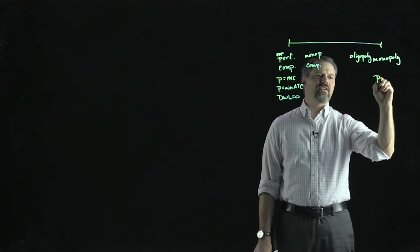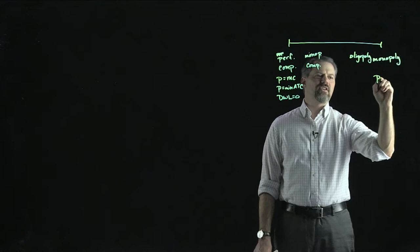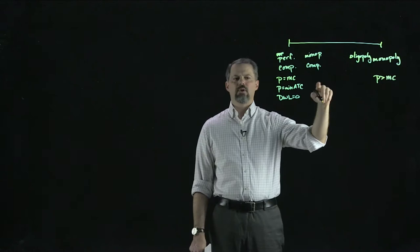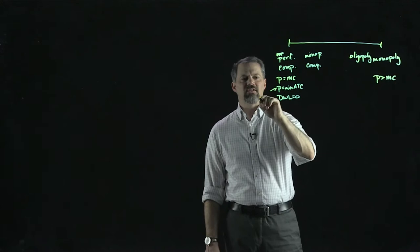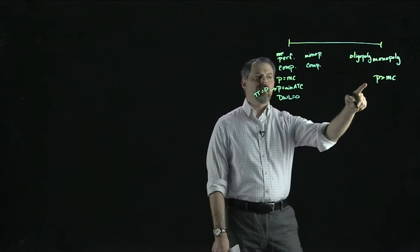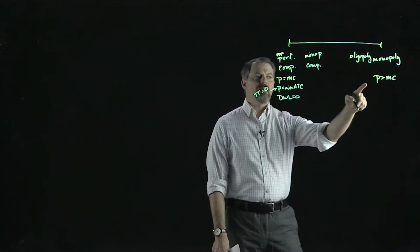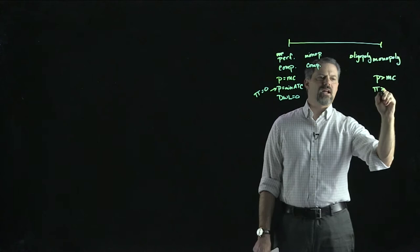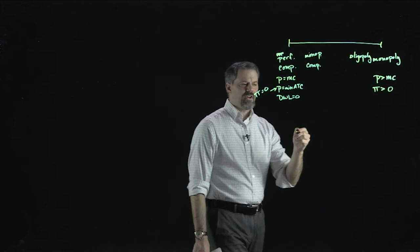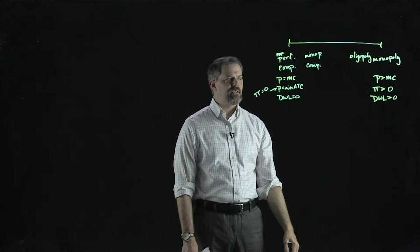There is productive and consumption efficiency with perfect competition, and deadweight loss equals zero. That's what we were thinking about when we discussed the efficiency of markets and the fact that a free market maximizes total surplus. With monopoly, price is greater than marginal cost — a monopoly charges more than their cost of production — and price is not driven to equal the minimum average total cost.